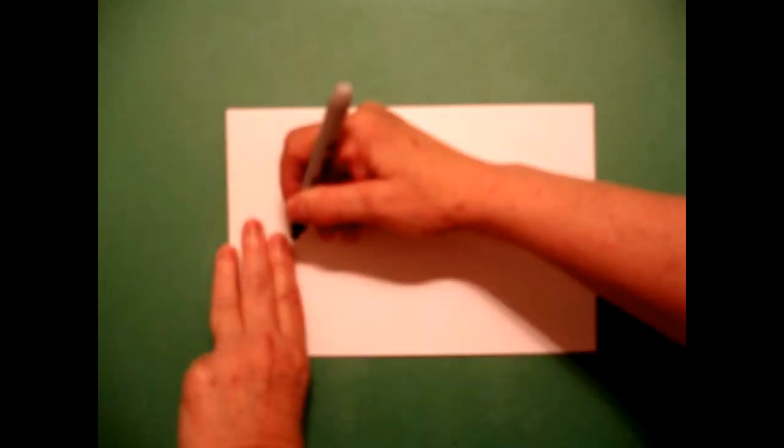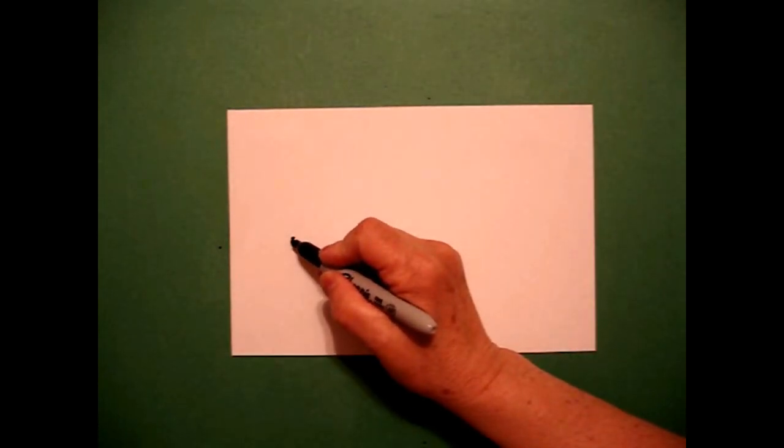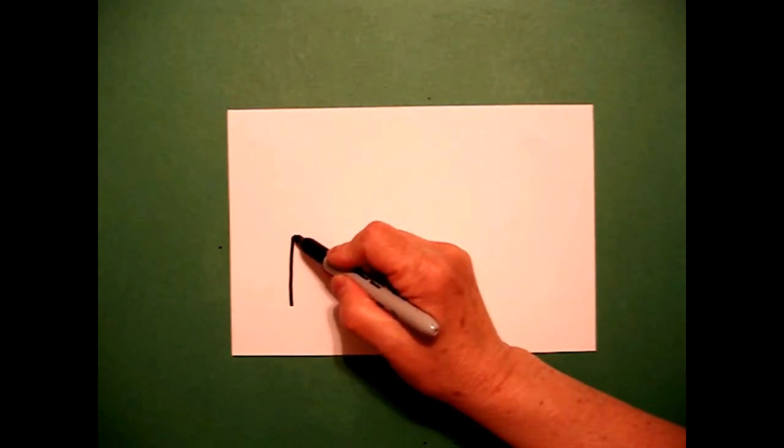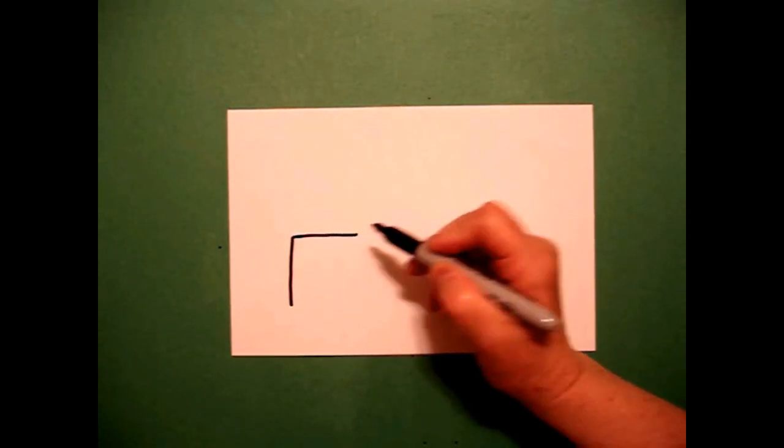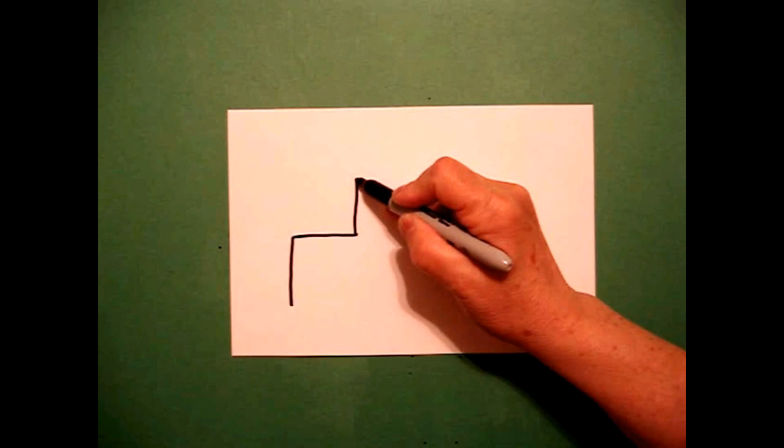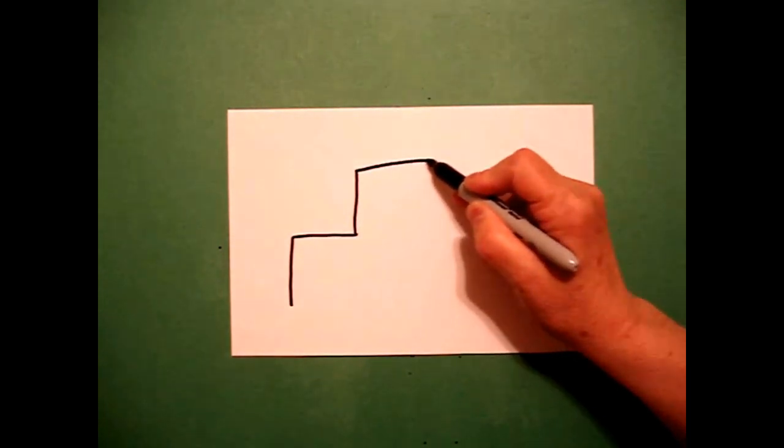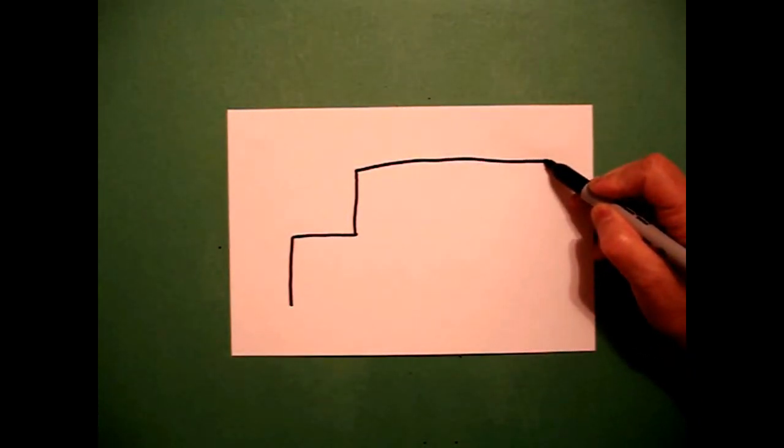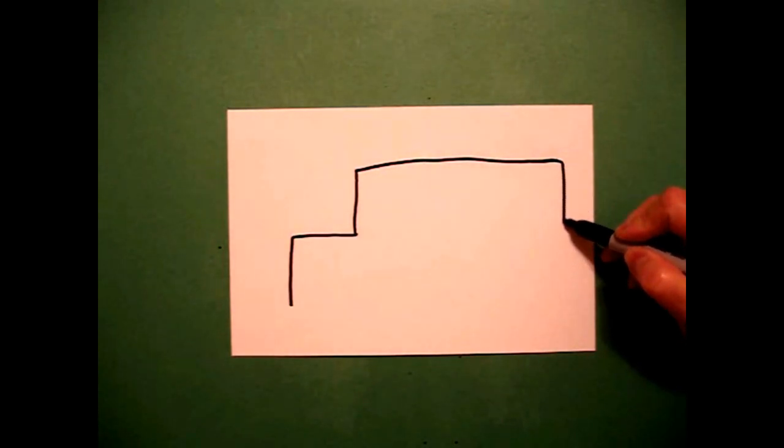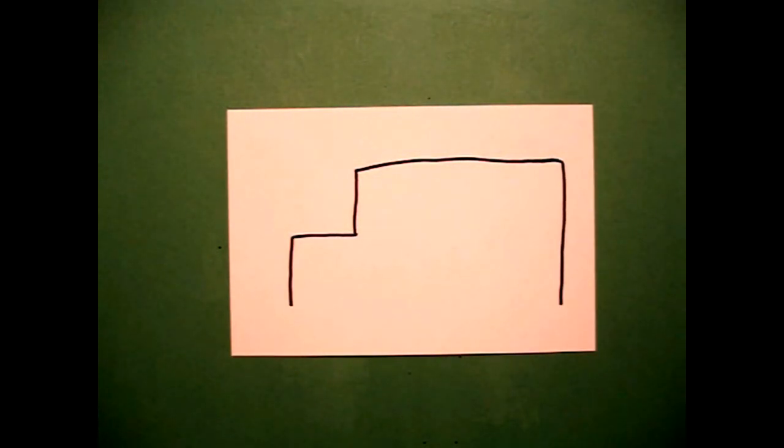I'm going to take three fingers on the left and put a dot. From that dot, I'm going to draw a straight line down, go back to the dot, straight line over, straight line up, big straight line all the way over, straight line down, and stop.